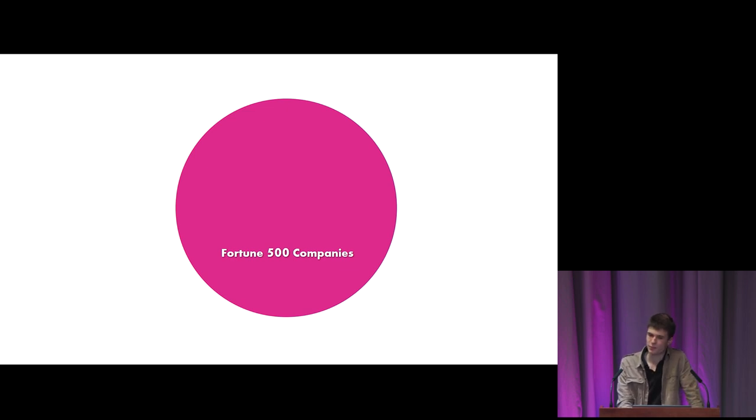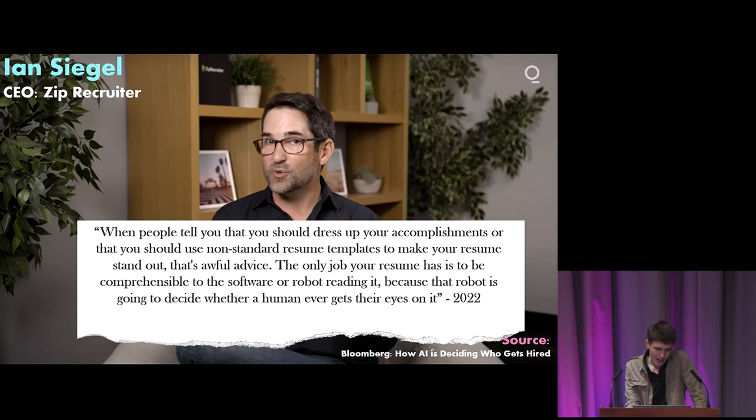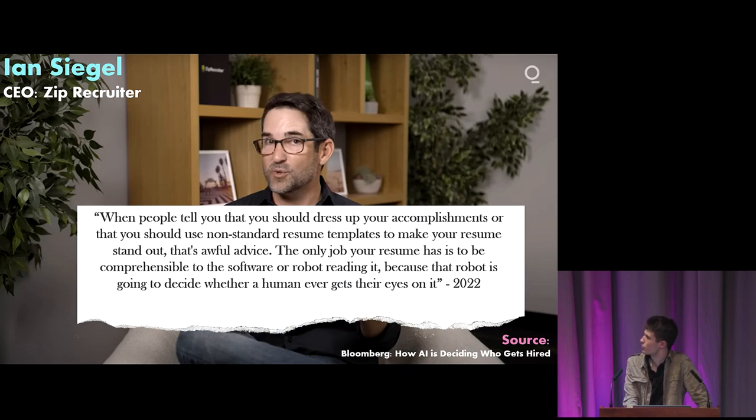So how is recruitment looking today? Of the Fortune 500 companies, they found that 99% of them actually admitted to using AI hiring quite regularly. Just to give a sense of quite how prevalent automated hiring is, I've got a quote here from Ian Siegel, the CEO of ZipRecruiter. He says, when people tell you that you should dress up your accomplishments or that you should use non-standard resume templates to make your resume stand out, that's awful advice. The only job your resume has is to be comprehensible to the software or robot reading it, because that robot is going to decide whether a human ever gets their eyes on it. So Ian goes on to say that AI can't be less biased than humans, because we can feed the data we want to into the system. But after a lot of research, I think Ian is wrong on this particular point.